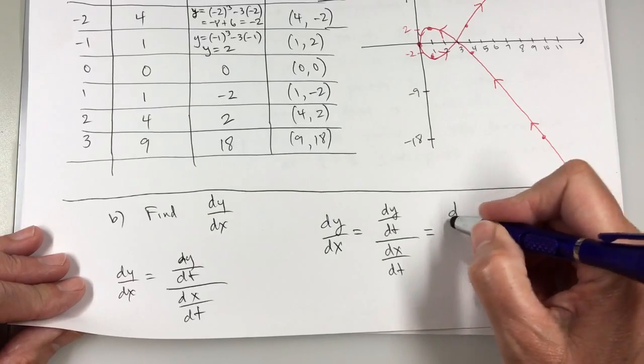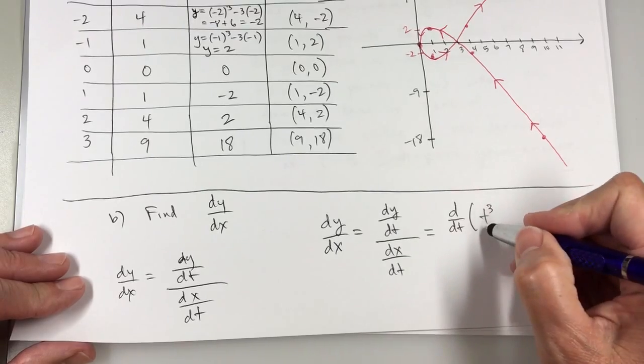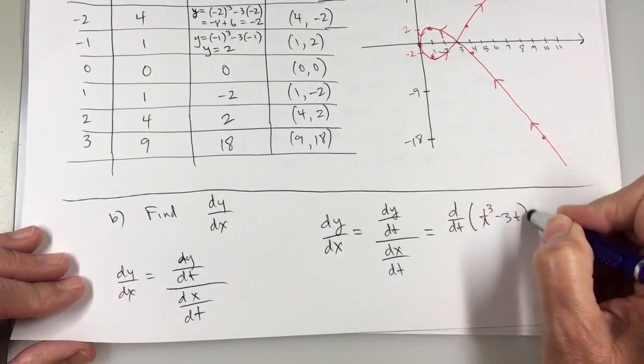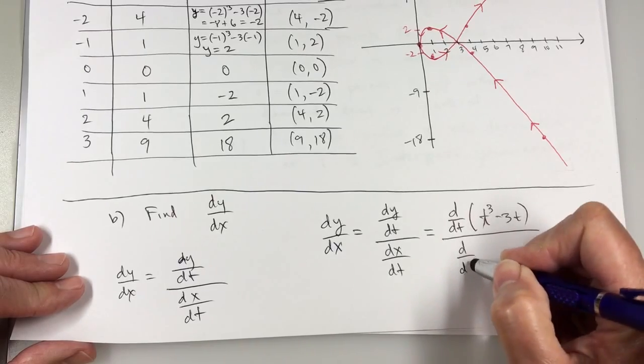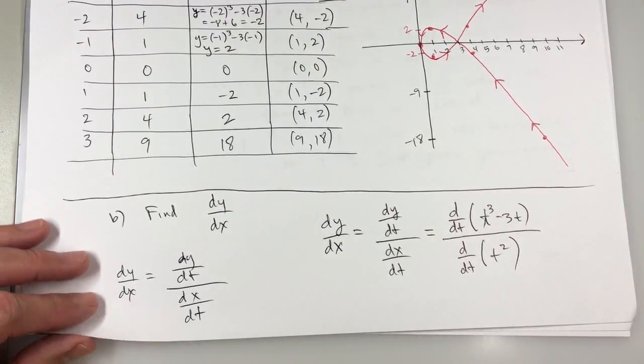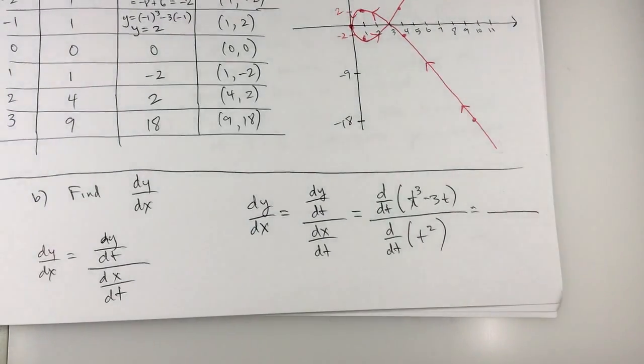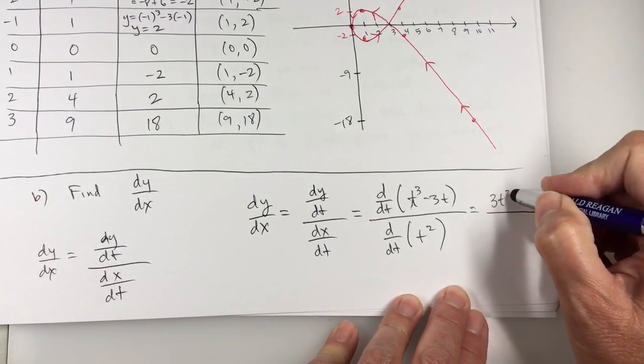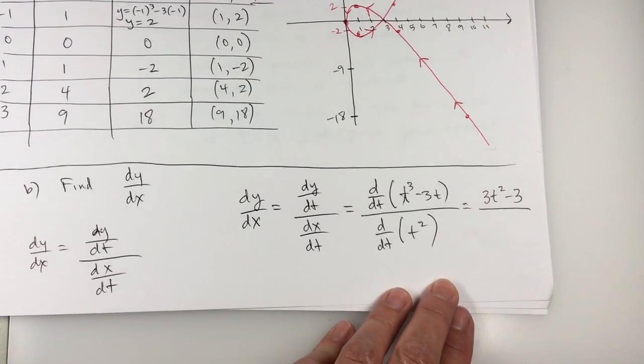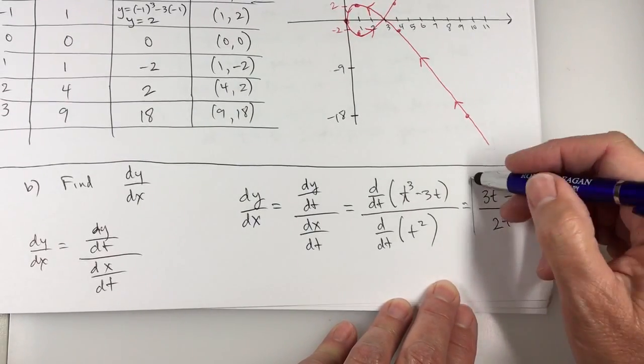Now the derivative of y with respect to t, y was t cubed minus 3t. And then the bottom part, the derivative of x with respect to t, x was t squared. So you just have to do the derivative of y and put it over the derivative of x with respect to t. So the numerator is 3t squared minus 3 and the denominator is 2t. There's the first derivative.